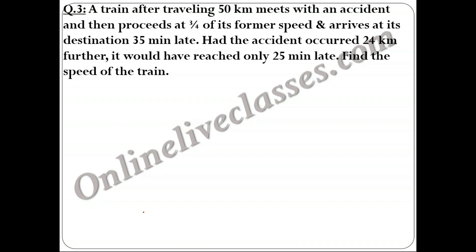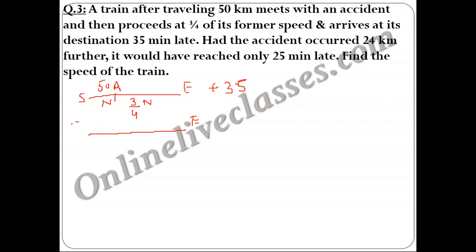Question 3: A train after traveling 50 km meets with an accident and then proceeds at three-fourths of its normal speed. Let the starting point be S and the ending point be E. The accident happens at point A, 50 km from S. After the accident, a second scenario has the accident 24 km further at point B. You need to find the normal speed of the train.